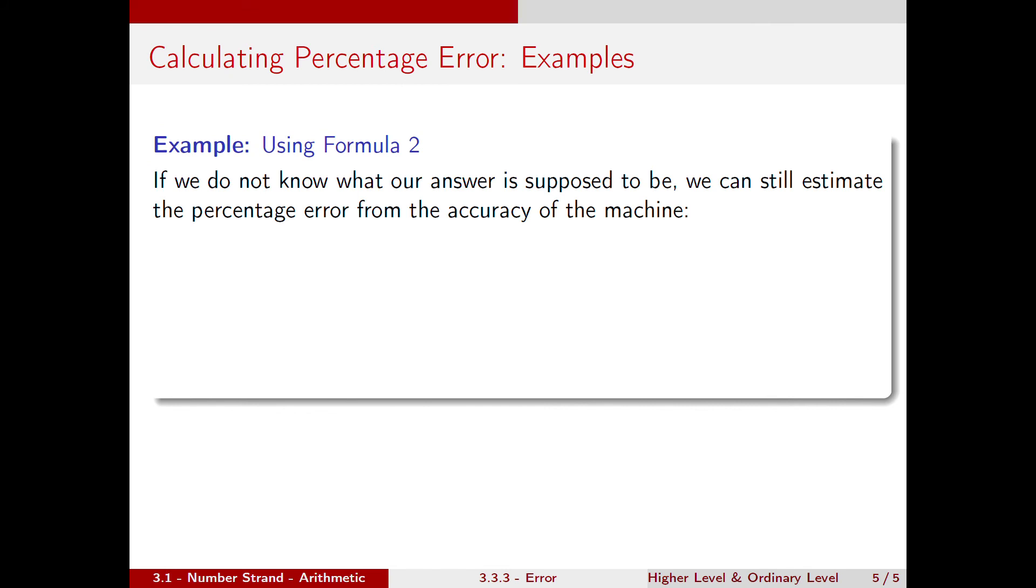Let's suppose we don't know what our answer is supposed to be. We can still estimate the percentage error from the accuracy of the machine. Again, our measurement of 1.23 amps, and we know the error is plus or minus 0.005 amps.